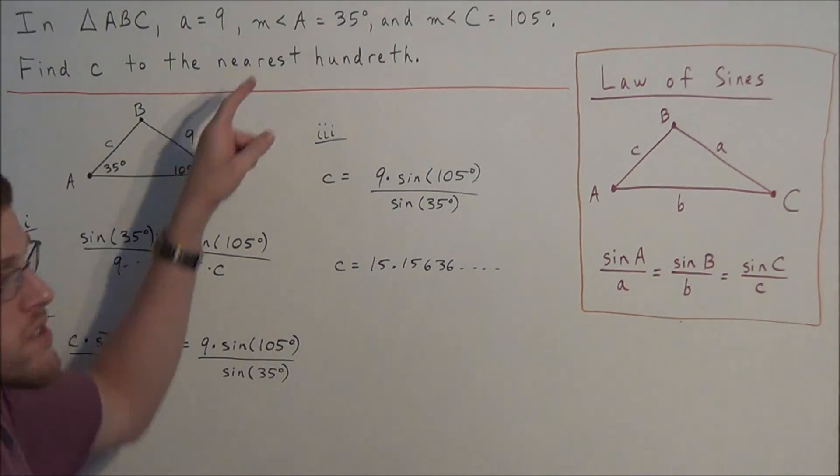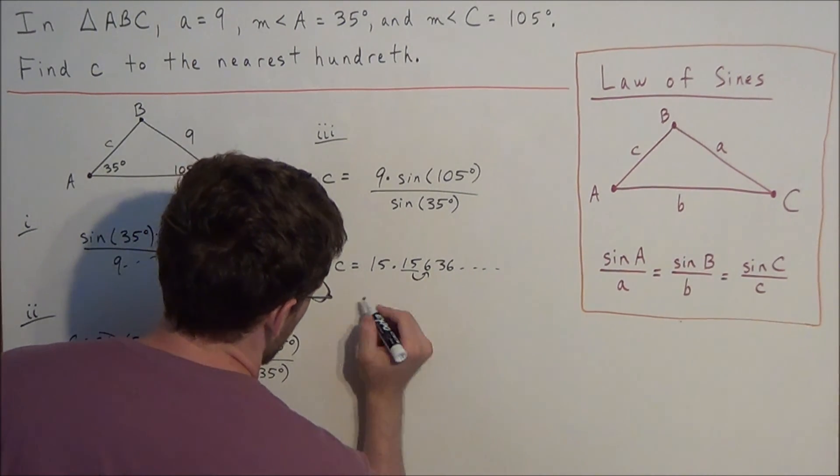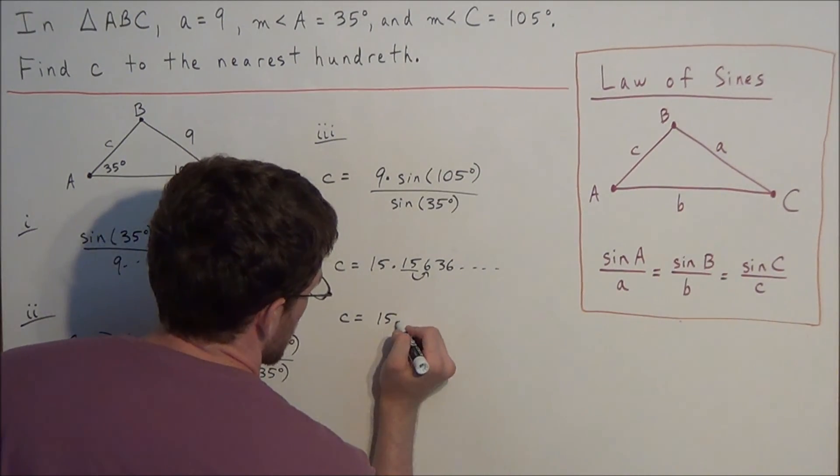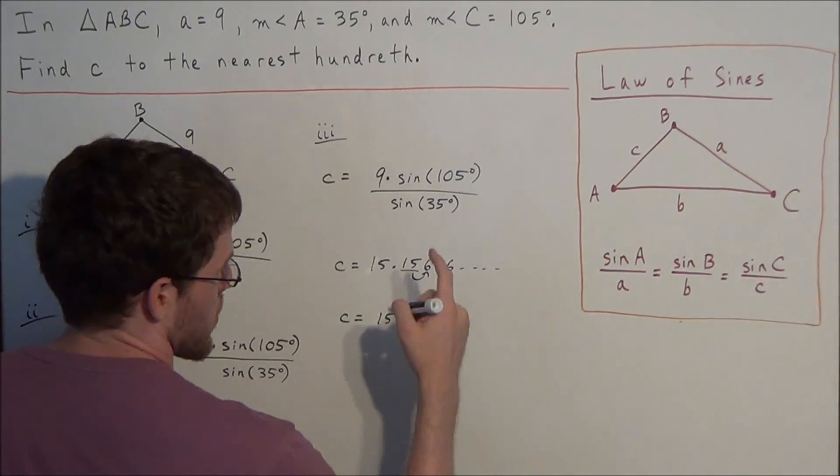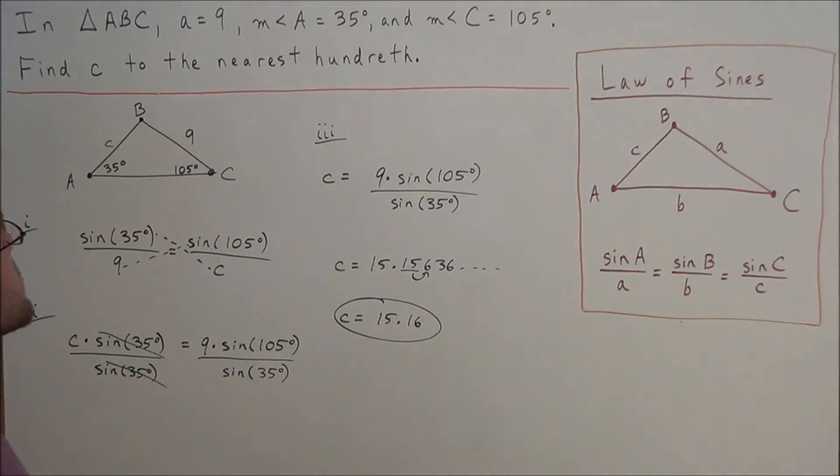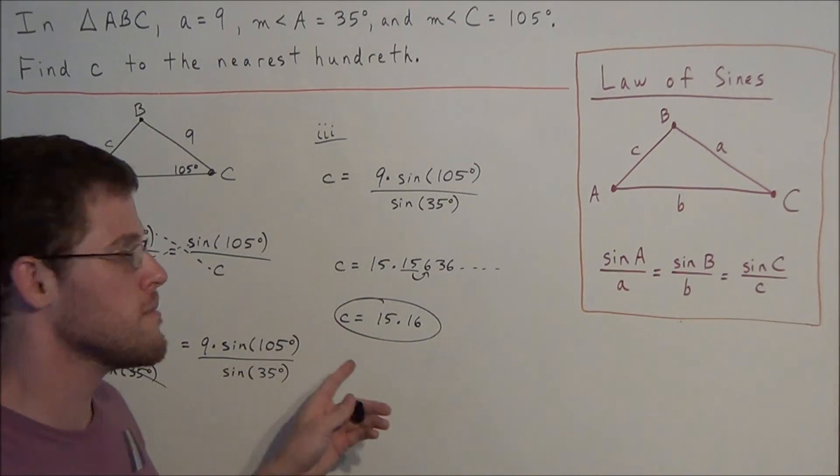But since we need to round to the nearest hundredth, we're going to highlight up to the hundredths place, and we're going to look one digit to the right. So when we round this, we're going to have 15.1, and now we're going to round up to 16. So our final answer, the length of side c to the nearest hundredth is 15.16.